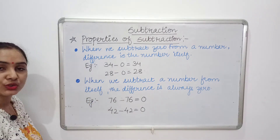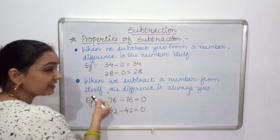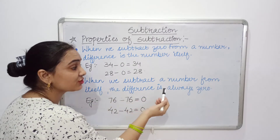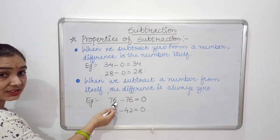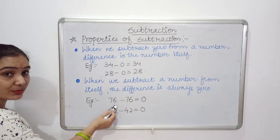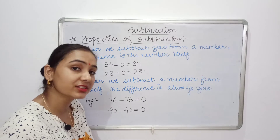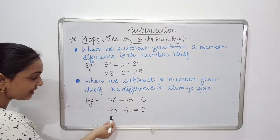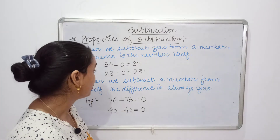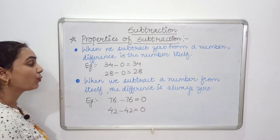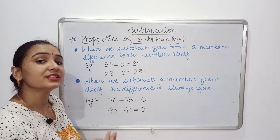Now the next property of subtraction: when we subtract a number from itself, the difference is always 0. For example, 76 minus 76 equals 0, and 42 minus 42 equals 0. So this property states that when a number is subtracted from itself, the answer will be 0.